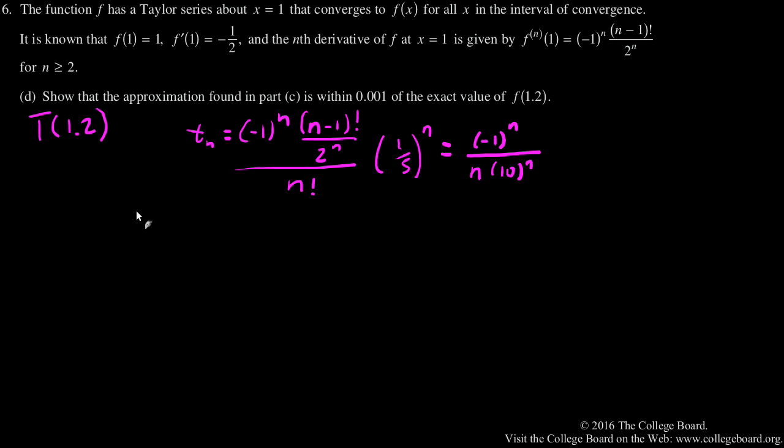So f of 1.2 is written as an alternating series where the magnitude of terms decreases towards zero.